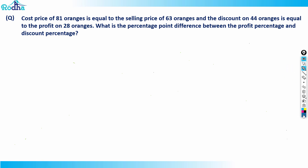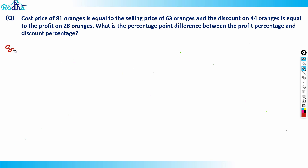Hi guys, let's look at this question from profit and loss — a good concept to revise. The question says that the cost price of 81 oranges is equal to the selling price of 63 oranges, and the discount on 44 oranges is equal to the profit on 28 oranges. What is the percentage point difference between the profit percentage and the discount percentage?